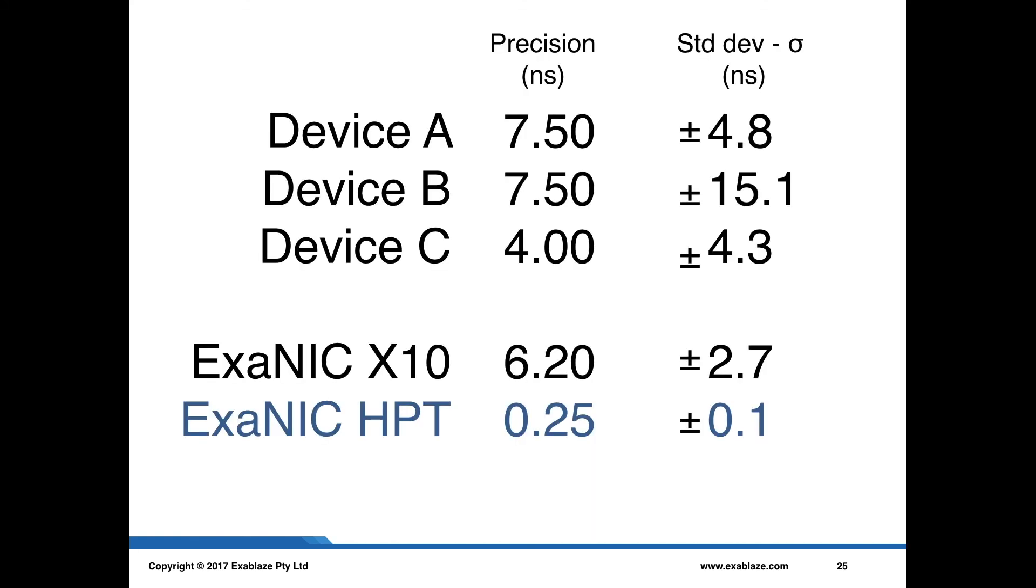So quantifying this a little bit with some numbers, you can see that the ExaNIC HPT has a plus or minus standard deviation of 0.1, which is 27 times better than the best device on there. So that's some really stellar performance, and it gives us a very high confidence in the measurements that we're going to be taking.